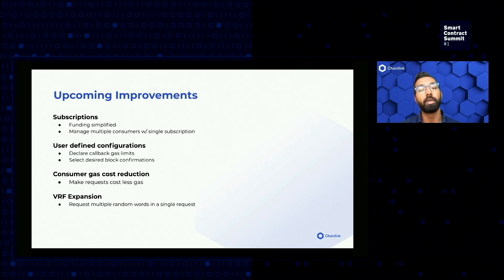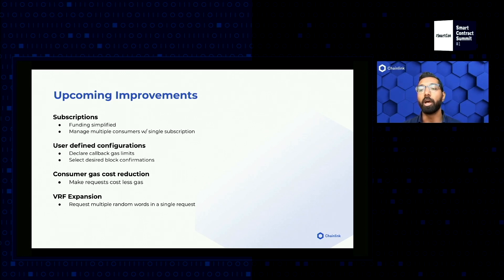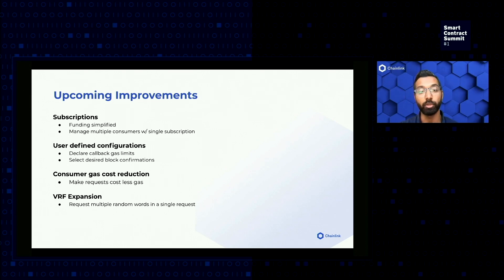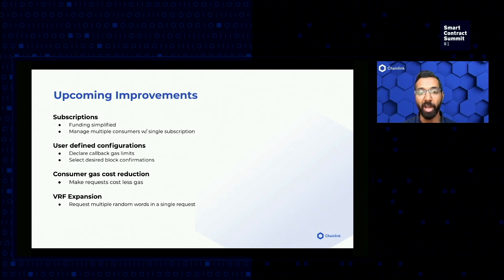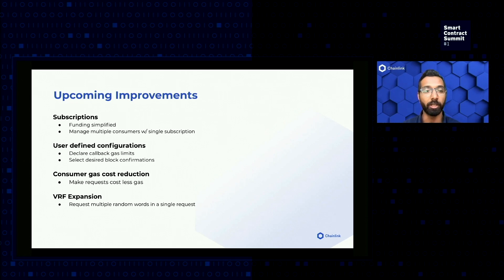We're also addressing user needs where some users request several random words simultaneously, which can get expensive over time in both finances and the time it takes to get responses. A single response can now be used by the VRF coordinator to expand the VRF response from the VRF node into several random words, greatly reducing the cost of fulfillment. For the cost of essentially doing one request, you can get 10 random numbers or 10 random words. If you're interested in any of this, please go to our website and reach out to us — we're more than happy to work with you to test out our new features and get you into production.